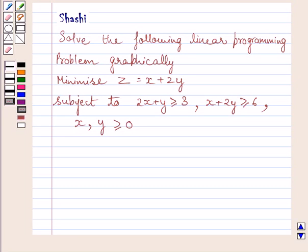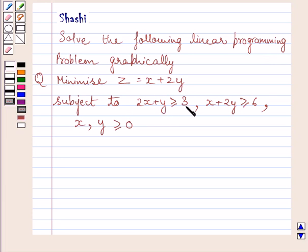Hello and welcome to the session. Let us discuss the following question: solve the following linear programming problem graphically. Minimize z = x + 2y, subject to 2x + y ≥ 3, x + 2y ≥ 6, x ≥ 0, y ≥ 0.